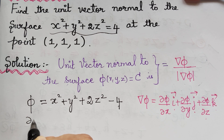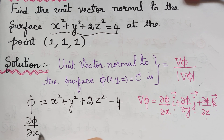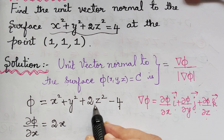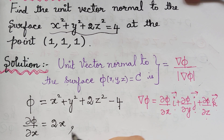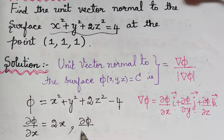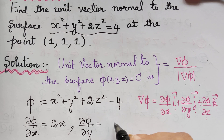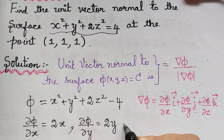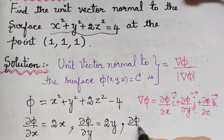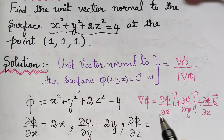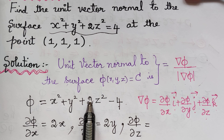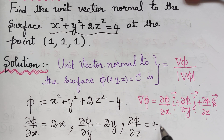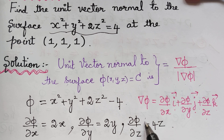So ∂φ/∂x = 2x, and the remaining terms become 0 as we are differentiating with respect to x. Similarly, ∂φ/∂y = 2y. For ∂φ/∂z, the other terms become 0, and for the 2z² term, the constant 2 multiplied by 2 gives 4, so ∂φ/∂z = 4z.